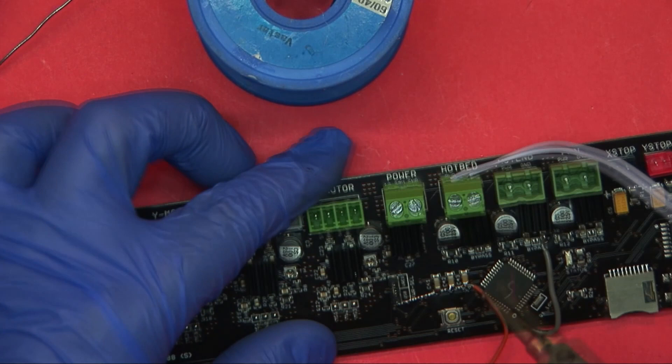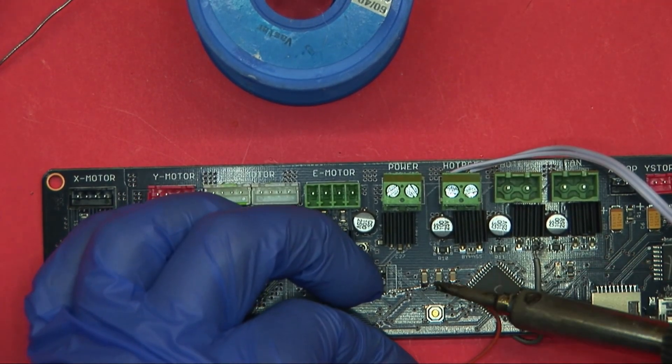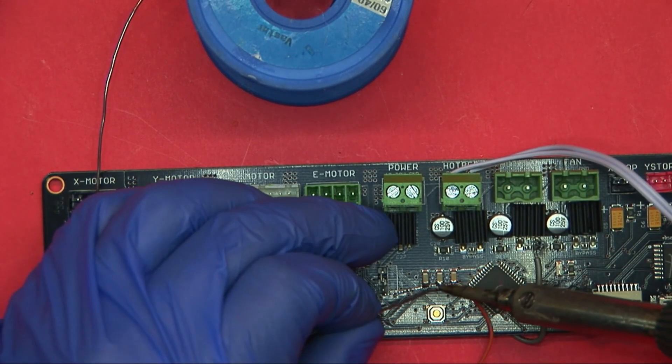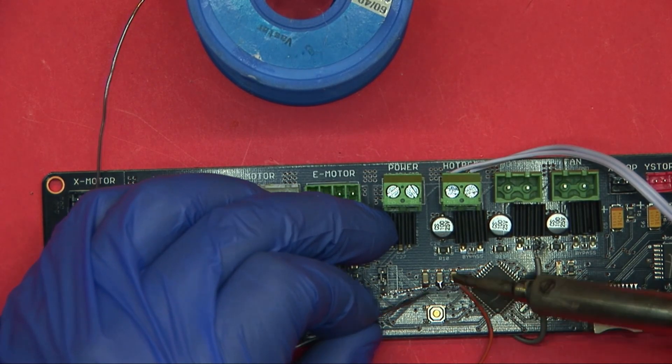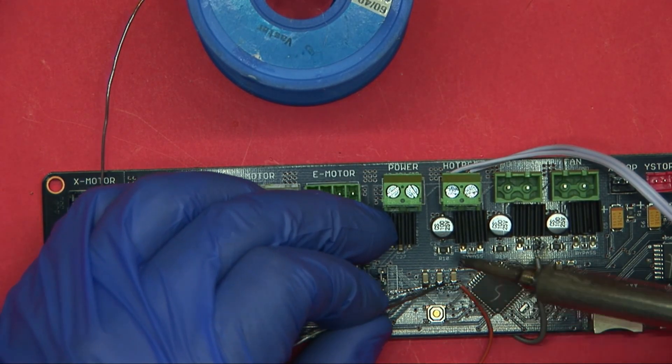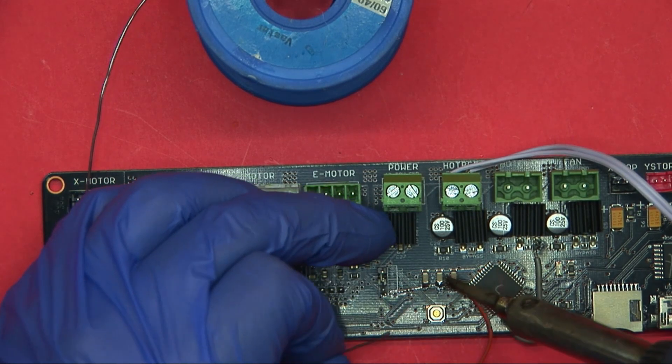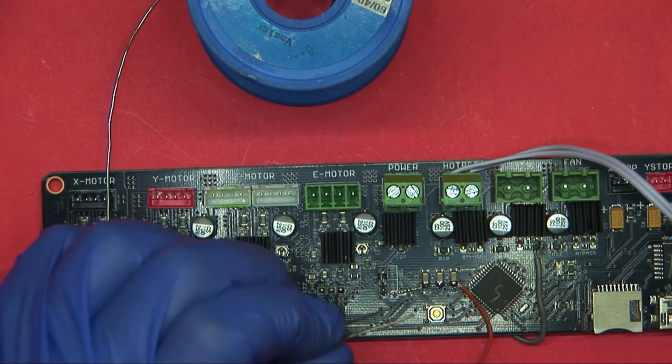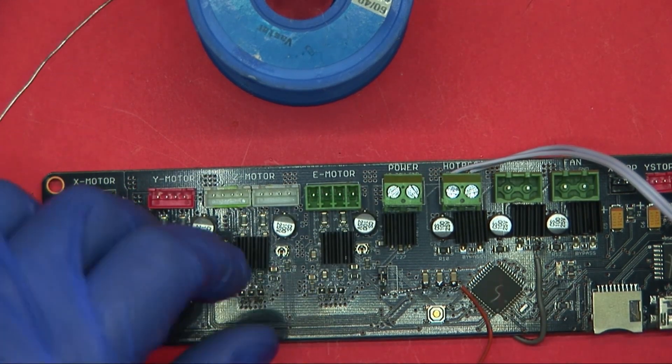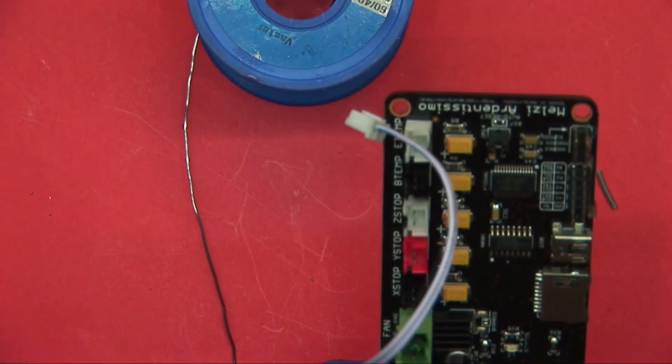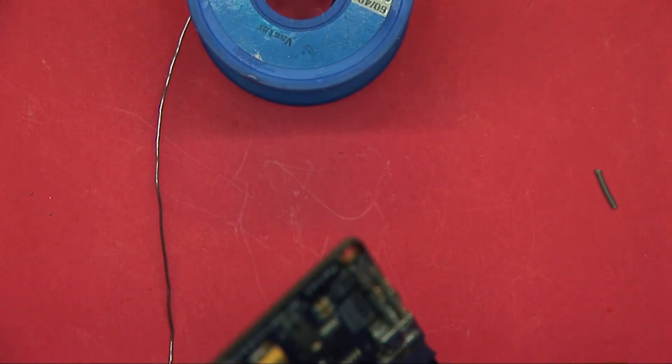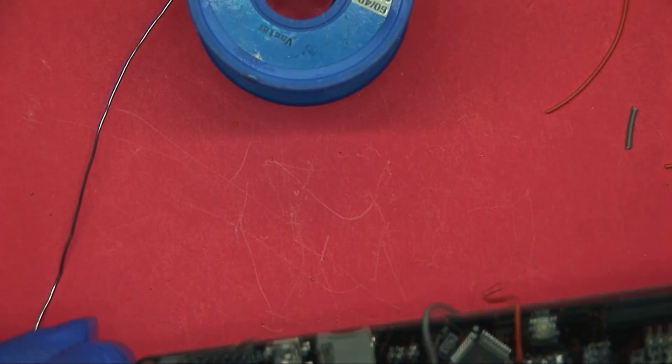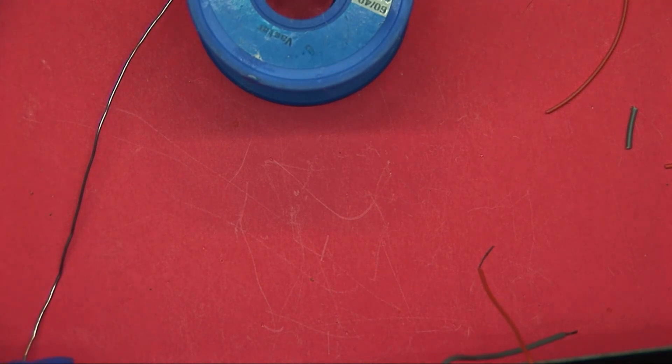Alright, did I just move? I just want to make sure I didn't move that capacitor. In case anybody is wondering, I'm soldering at about 340 Celsius because these are attached to a ground plane, so it's got to be a little bit hotter than normal. Alright, so next up is the bed temp and the e-temp.